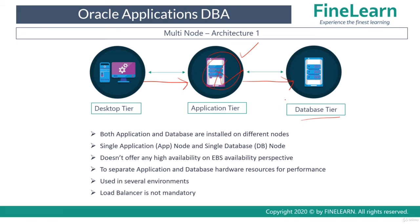In several customers, you usually see this kind of environment because all customers might not have Oracle database availability options such as Data Guard or RAC, for example. And even for the application tier, a lot of customers do not use multiple application tier nodes as well.